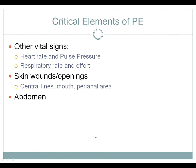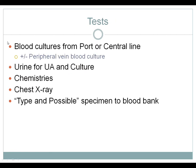Examine the abdomen, feeling for masses and focal tenderness, which is a common sign of abdominal infection. Obtain blood cultures from the port of the central line. Sometimes a peripheral vein blood culture is also drawn, particularly with an older or heavily used line. Having two sites allows comparison — a positive culture from the line along with a positive peripheral culture confirms bacteremia.